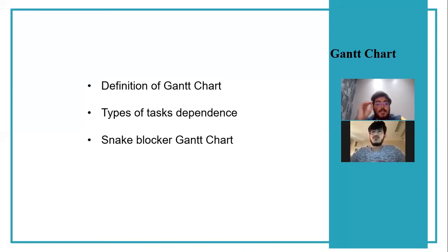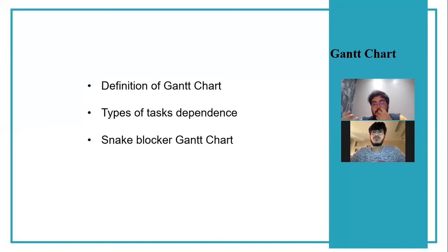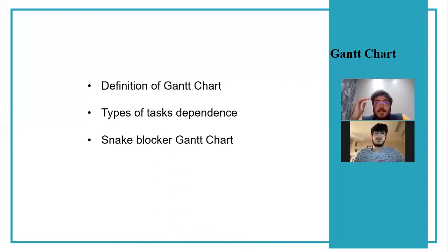The second relationship is Start-to-Start. For example, if you are making your floor, you should start mixing your concrete, and at the same time as mixing the concrete, you should prepare the area for the floor, so the concrete will not be damaged. The third relationship is Finish-to-Finish. For example, if you are watching a match, when the match ends, the broadcast of the match will end at the same time. That is an example of Finish-to-Finish.